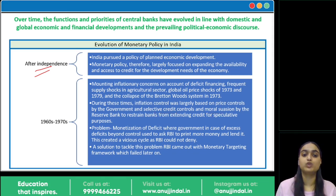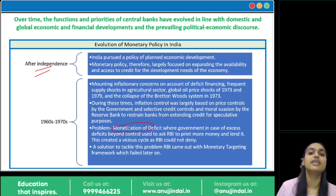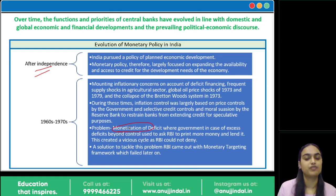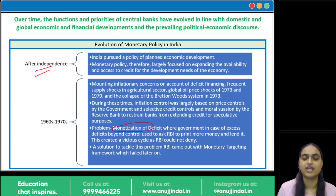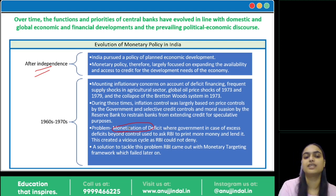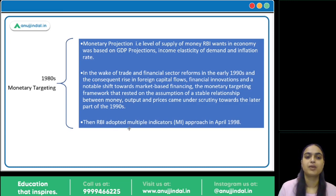One problem that continued throughout all this was monetization of the deficit — the government's excess deficits were financed through RBI loans, meaning RBI printed money to fund the government. This vicious cycle continued where the government, in case of excess deficits, was dependent on RBI. A solution to tackle this problem came in the form of monetary targeting, which RBI adopted as a framework, though it later proved not very successful.